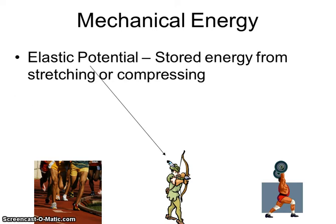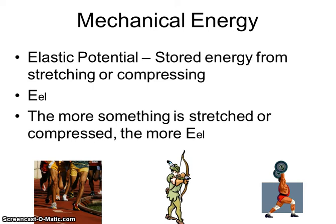Right now we just want to be able to identify what type of energy is present, because that's going to help us figure out what equation to use. The second type of energy is elastic potential energy. Whenever we use the word potential, we're talking about stored energy. So whenever we stretch or compress something, it has elastic potential energy. Here you can see Robin Hood drawing an arrow with the bow — as soon as he stretches the bow, it has elastic potential energy. A spring or a bouncing ball would also have elastic potential energy. We use EEL to represent elastic energy. The more something is stretched or compressed, the more elastic energy it has.